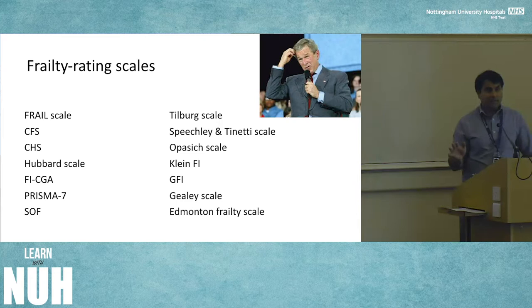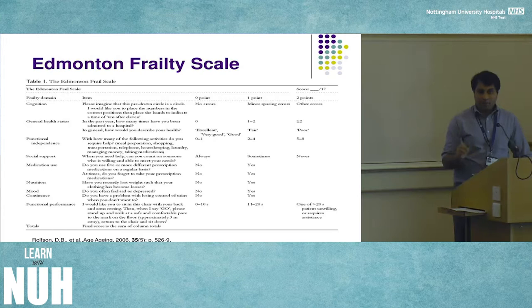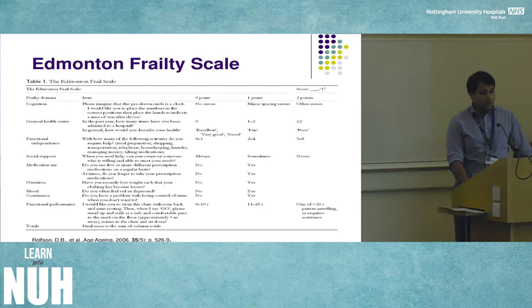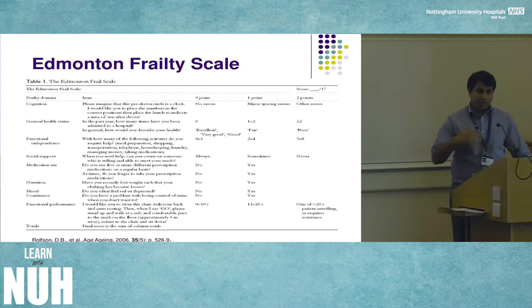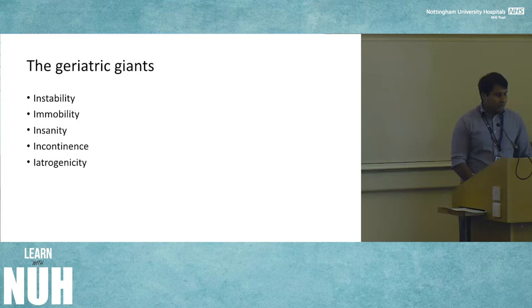There are lots of tools available for identifying frailty, which can be confusing. I'll make particular mention of the Edmonton Frailty Scale because it has been validated in the perioperative setting and we often use it in a preoperative clinic. It's multi-domain, looking at cognition, health status, social support, medication, and nutrition. It scores out of 17; a score of eight or more indicates mild, moderate, or severe frailty with cut points for each category. It takes about five minutes once you know how to use it, and it also helps to focus any intervention.